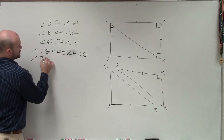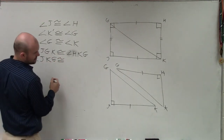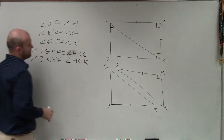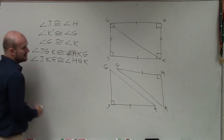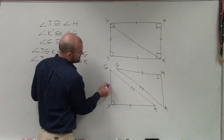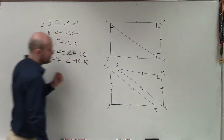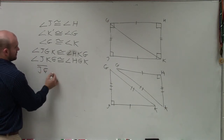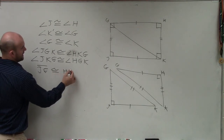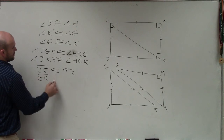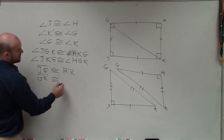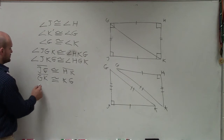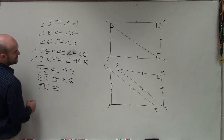The other one would be angle J, K, G is congruent to angle H, G, K. And then for the last part, we just need to go for the side lengths. If these two are equal, then we could say these two are equal because we know it's the same side. So we could say side JG is congruent to HK, GK is congruent to KG, and JK is congruent to HG.